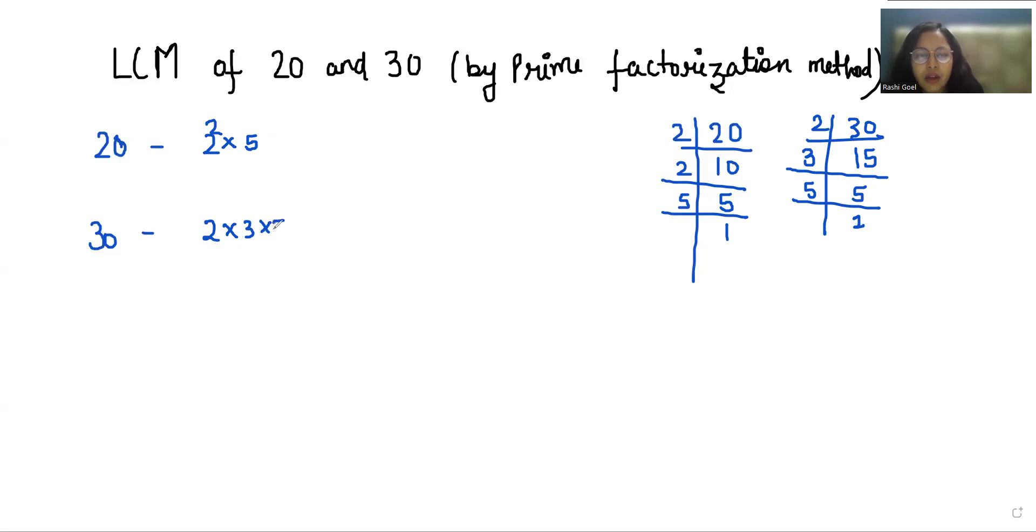Now how to find LCM of 20 and 30? We have to write the product of all prime factors of the given numbers taken with their highest power. So first write all the prime factors given.